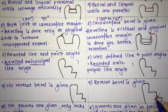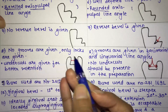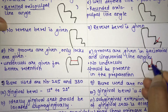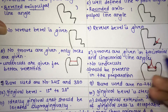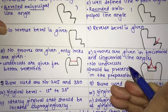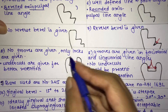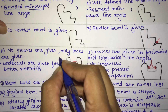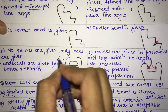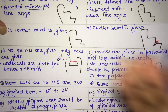In amalgam, no reverse bevel is given, whereas in cast restoration a reverse bevel is provided. No grooves are given in amalgam, whereas in cast restoration grooves are given in the facio-axial and linguo-axial line angles. In amalgam, no undercuts are needed since the convergent walls automatically create the undercut for retention. In cast restoration, undercuts can be given.